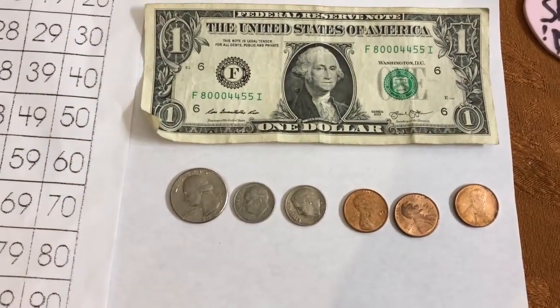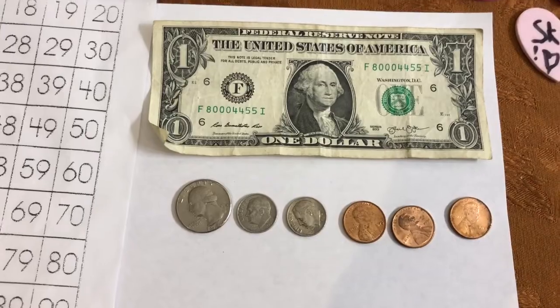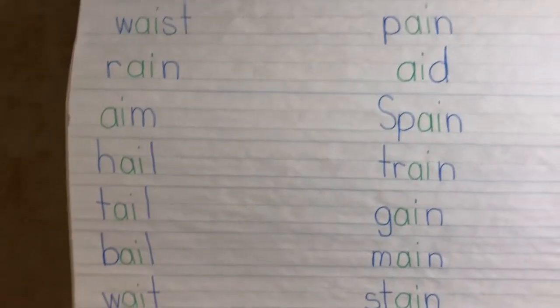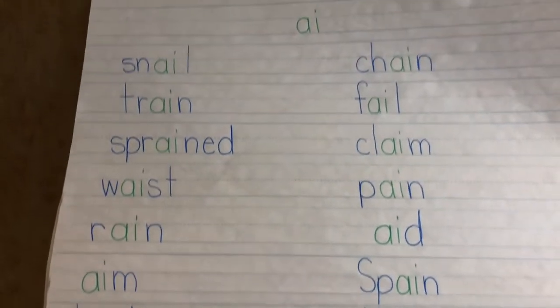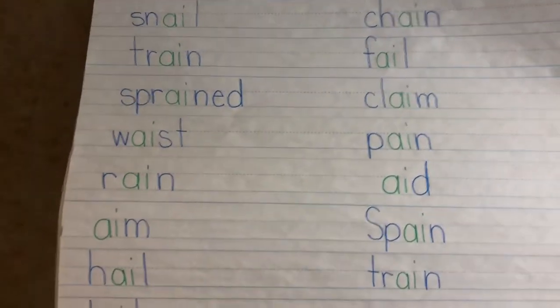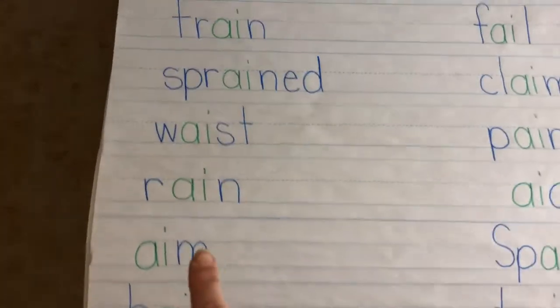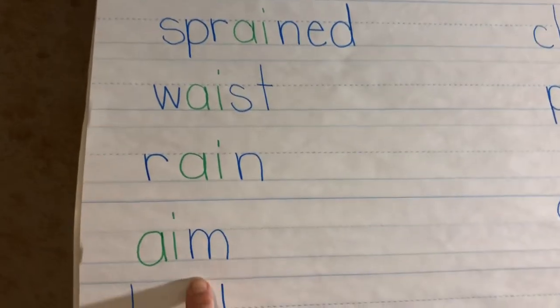If you have another way, think about it. Ask a grown-up and see if you were right. Let's come to our chart. I got so many suggestions about words with the AI vowel team that says A. We left off with RAIN, so let's look here.